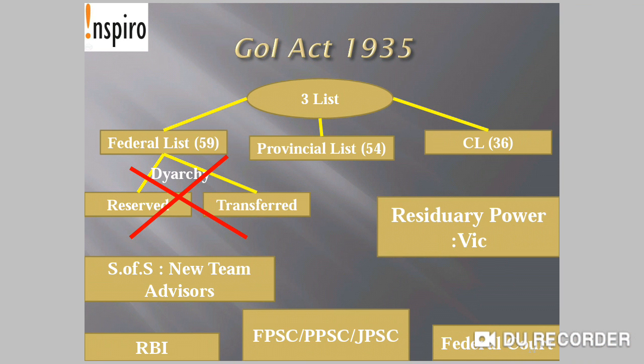The Diarchy system introduced in the provinces under the Government of India Act 1919 was abolished by the Government of India Act 1935. But Diarchy was introduced at the central level — with a Reserved List and Transferred List of subjects — though that provision also did not come into force. The Secretary of State's Council of 15 members was dissolved and a new team of advisors was appointed to the Secretary of State.